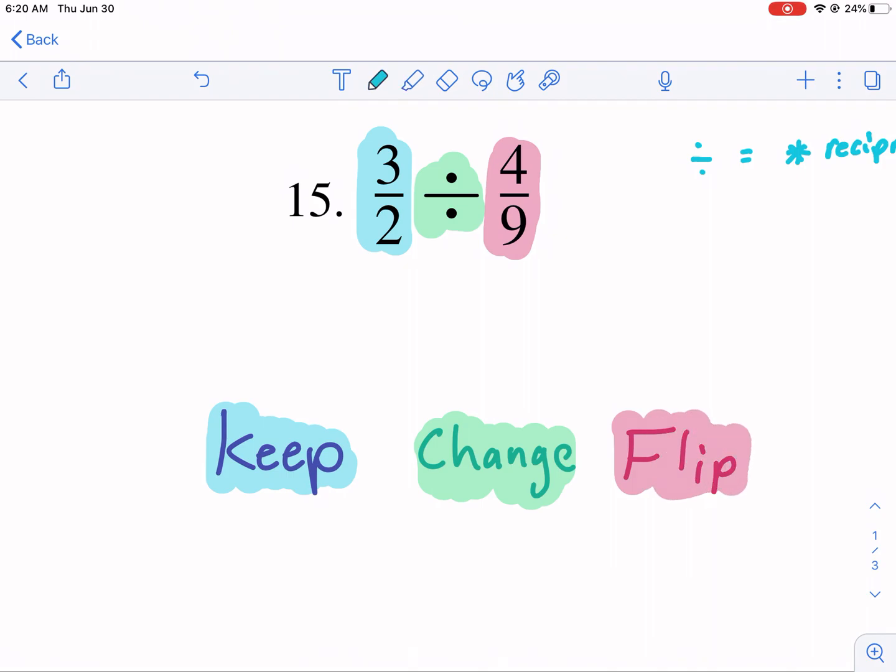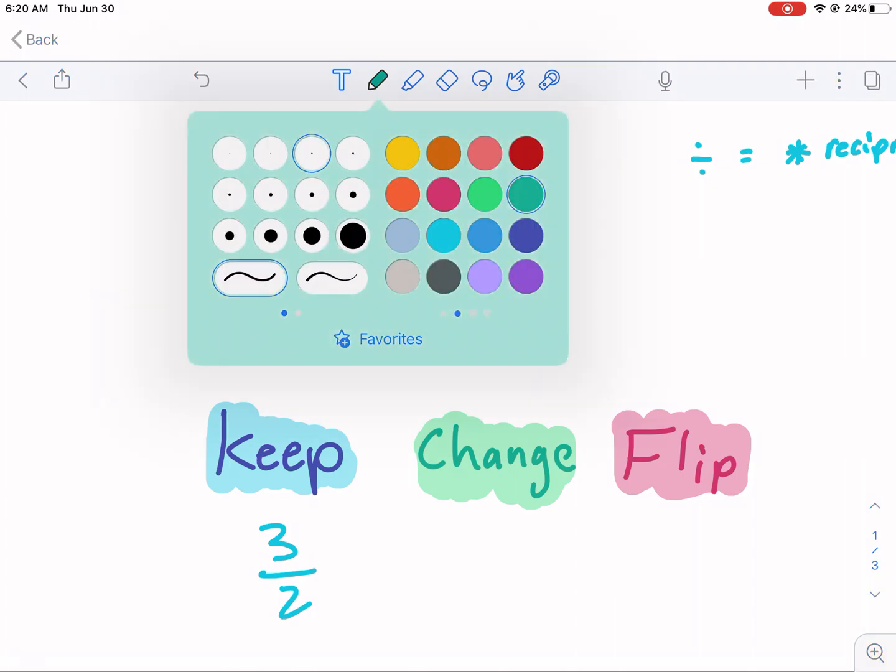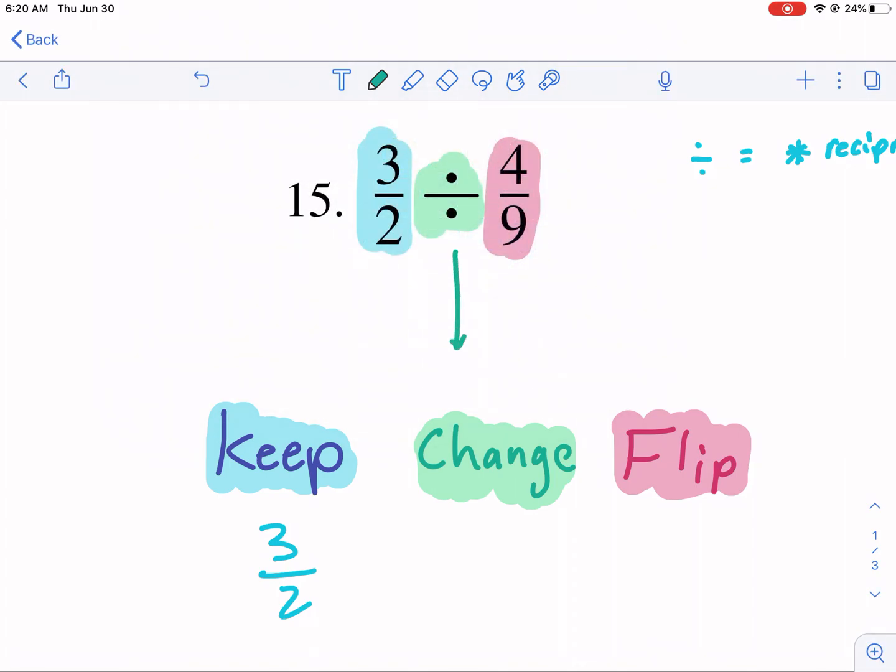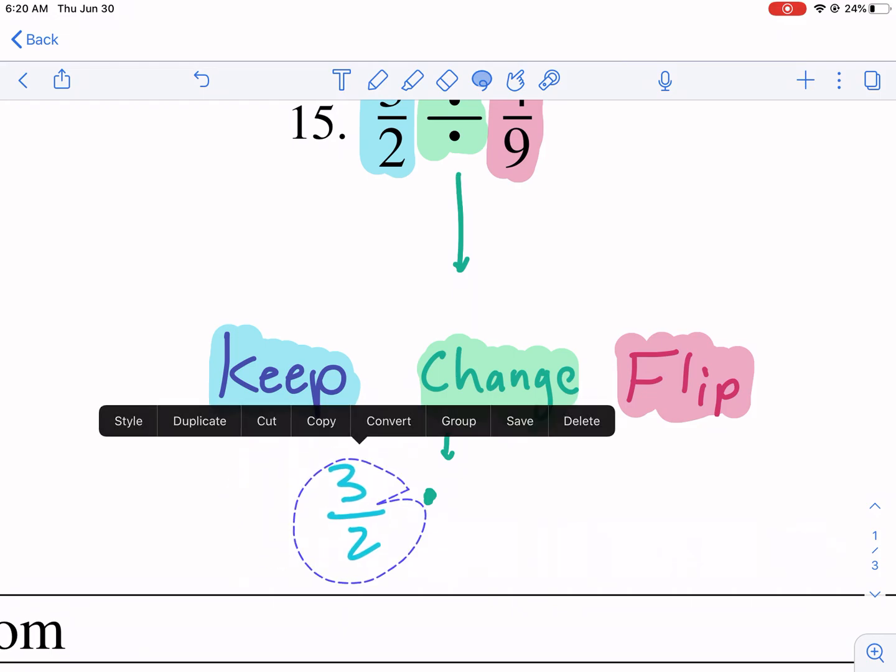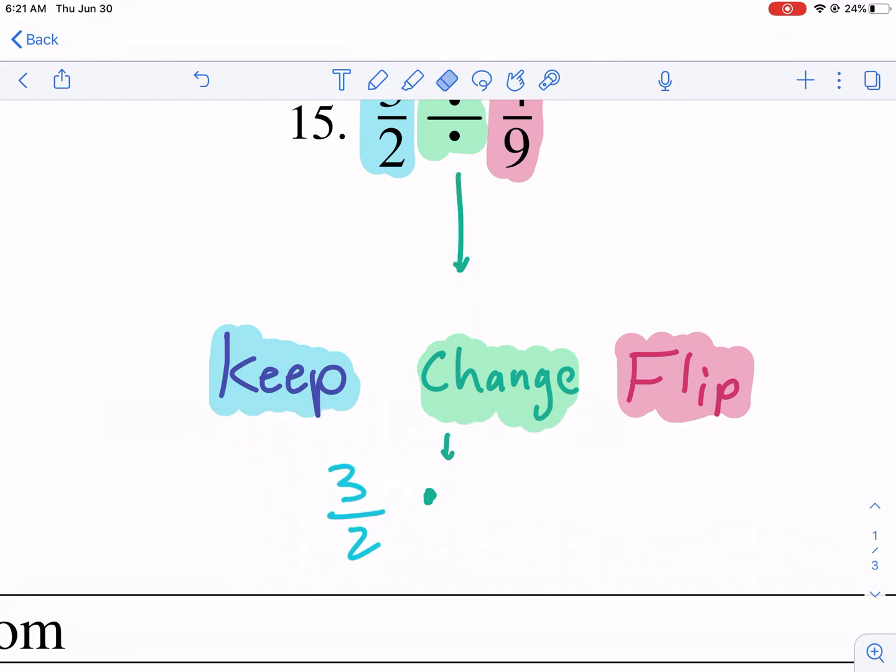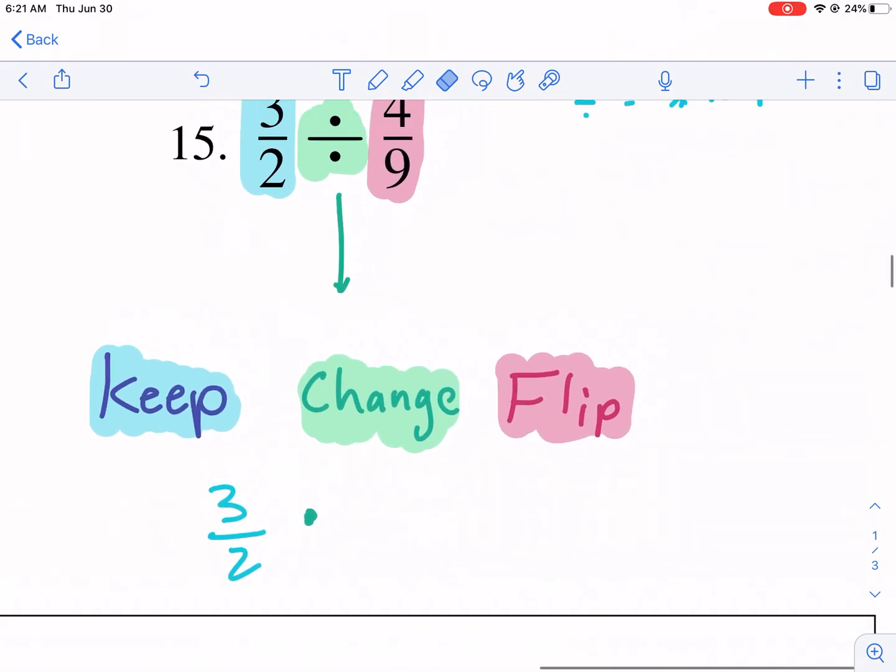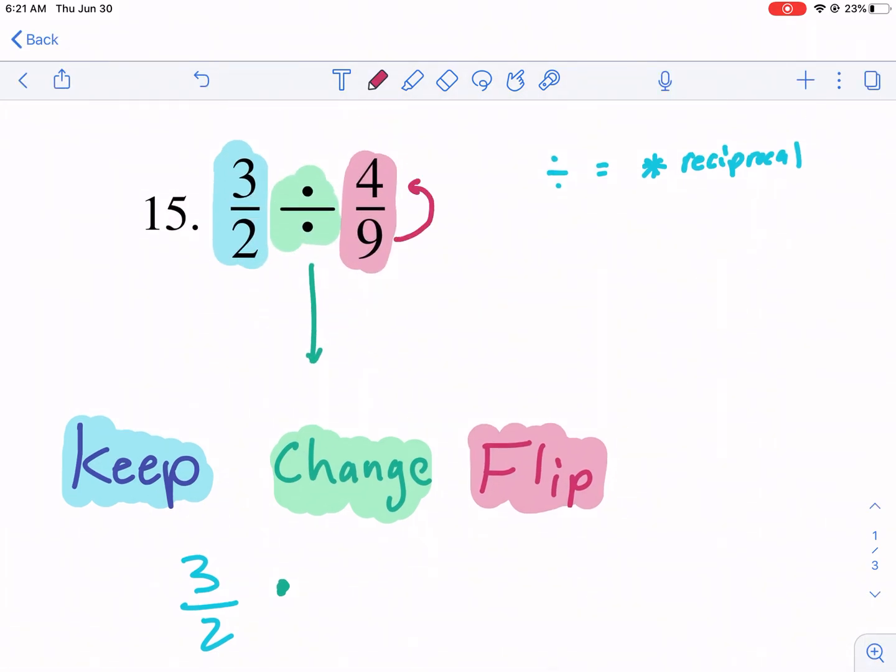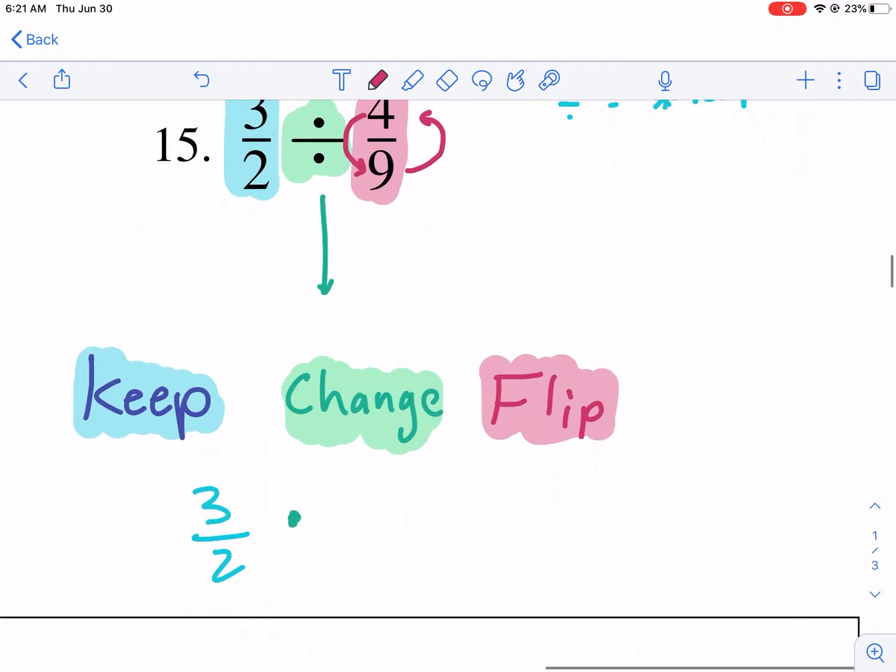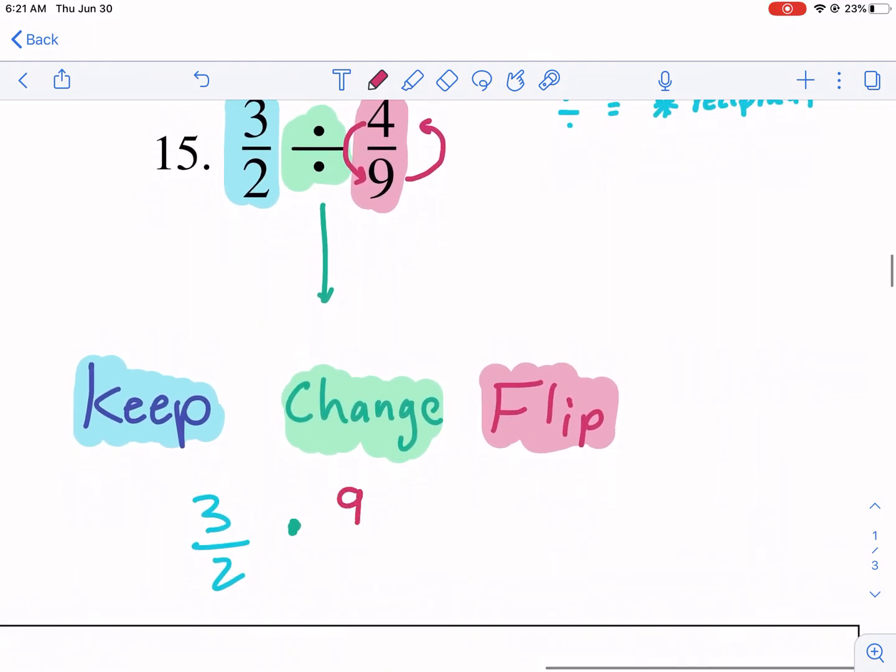So what am I going to do? I'm going to keep three halves. So I'm going to go ahead and write that down here, three halves, three over two. I'm going to keep that the same. Change. What do I change it to? Well, I'm going to change it from division to multiplication. I'm going to use a dot because when you're getting into algebra, the x looks like a variable. So we don't want that. So I'm just going to use the dot. It still means multiplication. And then I'm going to flip. Flipping means we're going to change this guy to be the reciprocal. Reciprocal means the denominator becomes the numerator, and the numerator becomes the denominator. So instead of four over nine, it's going to become nine over four.